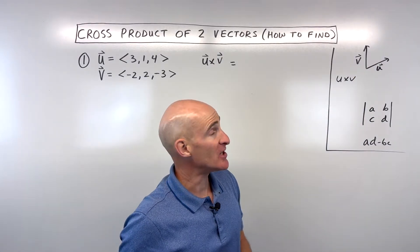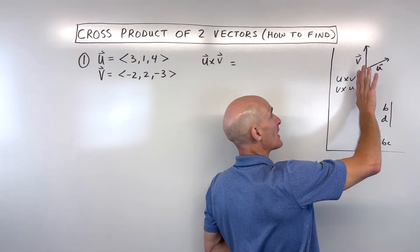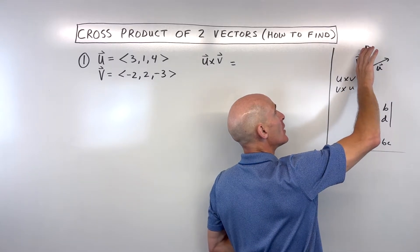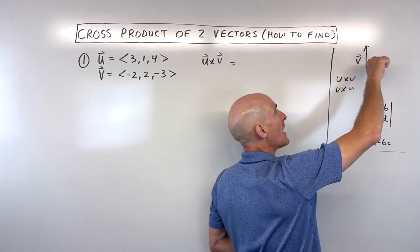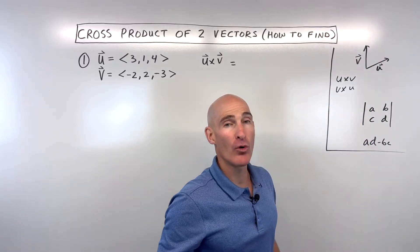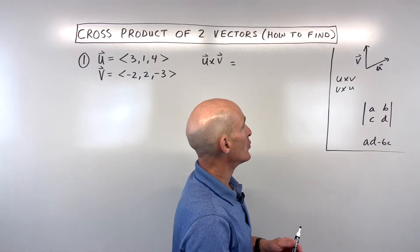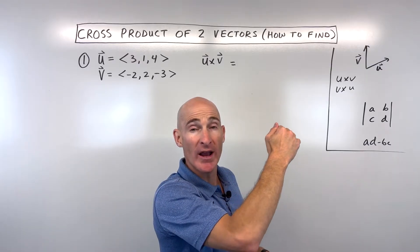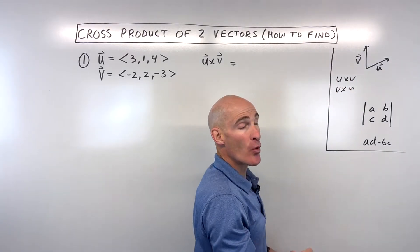Now if you were to change it and say we wanted to find v cross u, you would take your right hand, put your fingers along that first vector — in this case vector v — curl them towards the second vector u, and the direction that your thumb points is going back behind the board. The vector is going to be perpendicular to those two original vectors, just going 180 degrees opposite that first vector when you change the order. So the order is really important when you're finding the cross product.